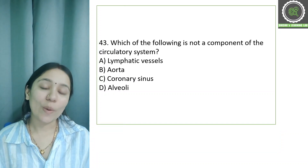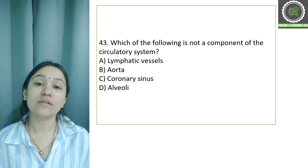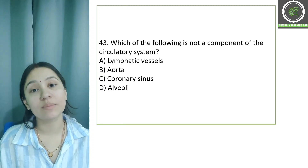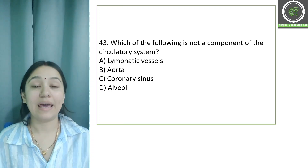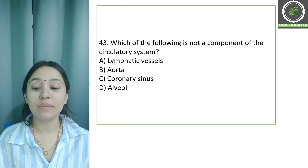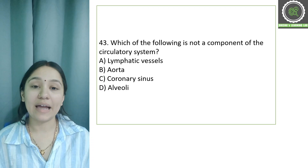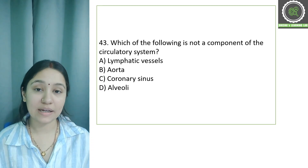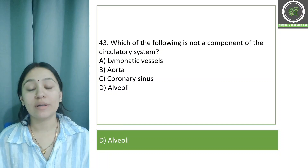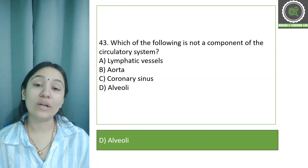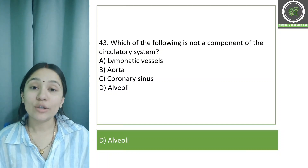Question number 43: Which of the following is not a component of the circulatory system? Options: A) lymphatic vessels, B) aorta, C) coronary sinus, D) alveoli. The correct answer is option D, alveoli, because the alveoli belong to the respiratory system — they are not a part of the circulatory system.